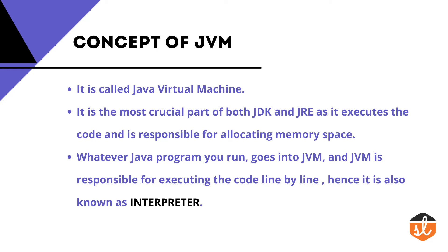JVM stands for Java Virtual Machine. It is an important part of both JDK as well as JRE — I will prove this in further slides with the help of formulas. JVM is also responsible for allocating memory space. Whenever you write any Java program using JDK or run any Java program using JRE, it first goes into the JVM. JVM is responsible for executing that Java program line by line, which is why it is also called an interpreter.